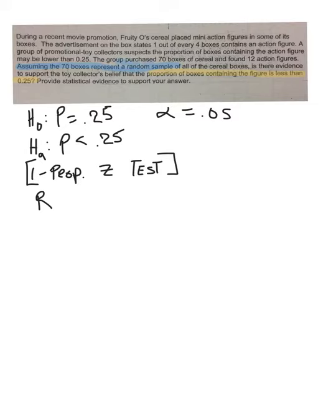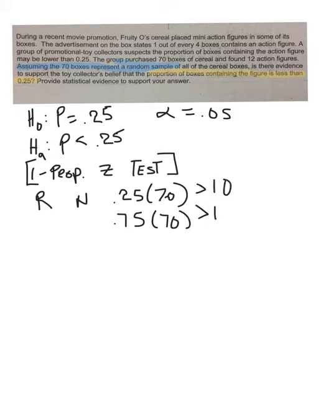And is it normal? We would have to take 0.25 times 70 and 0.75 times 70. Are both of those bigger than 10? And the answer is yes.